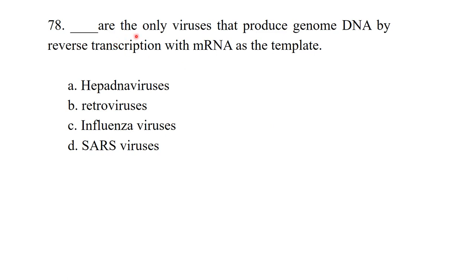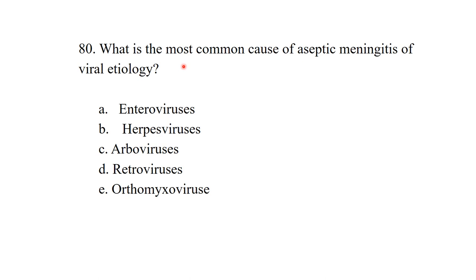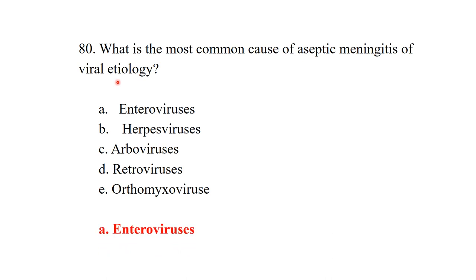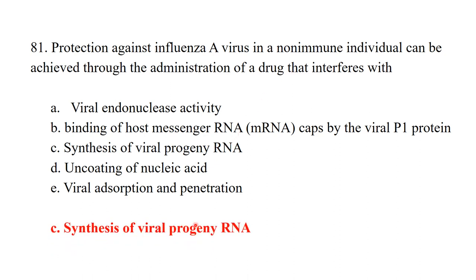Which are the only viruses that produce genomic DNA by reverse transcription using messenger RNA as a template? They are retroviruses. Hepatitis A virus is also known as enterovirus 72. The most common cause of aseptic meningitis of viral etiology is enteroviruses. Protection against influenza A virus in non-immune individuals can be achieved through administration of a drug that interferes with synthesis of viral progeny.